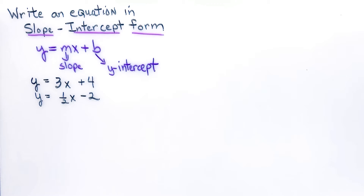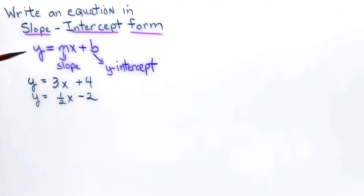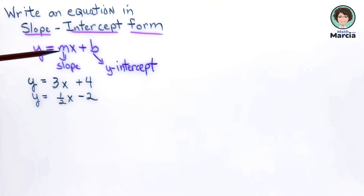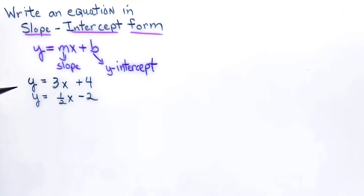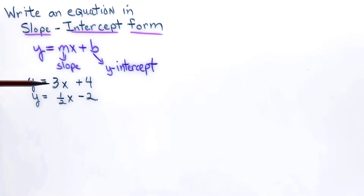Today we're going to be writing an equation in slope-intercept form when slope and the y-intercept are given to you. The equation you must know is y equals mx plus b: m always stands for the slope and b is your y-intercept. For example, y equals 3x plus 4 has slope 3 and y-intercept 4.